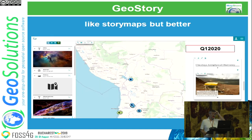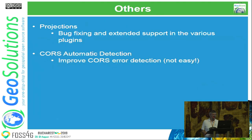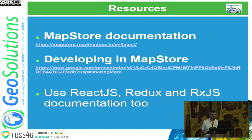Finally, we started building something different that you probably see from other vendors — there is an Esri product that is very similar called GeoStory. We are building something similar with MapStore — and we're not just trying, we are implementing it right now. It will probably be out in the first quarter of 2020. It's a different way to use maps to tell a story, not just to show information — storytelling. We will also continue to improve everything from last year with bug fixing and similar work.